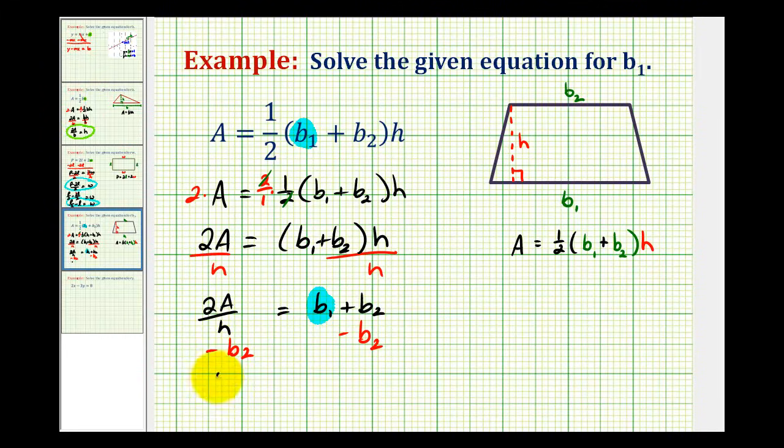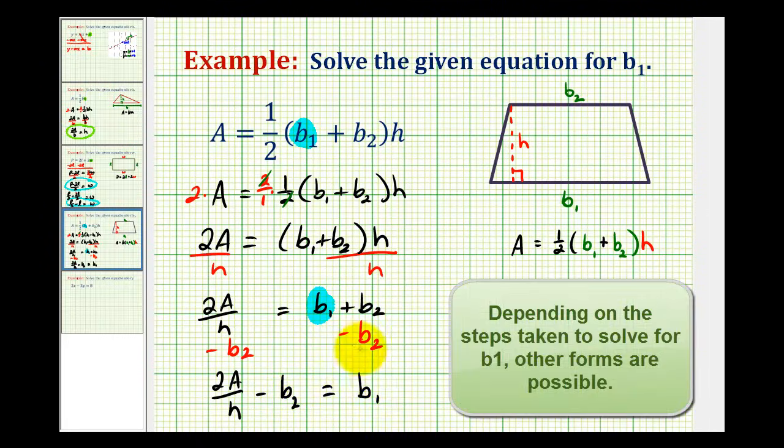So on the left side, we have two A divided by H minus B sub two is equal to B sub one. So now we've solved this equation for B sub one.